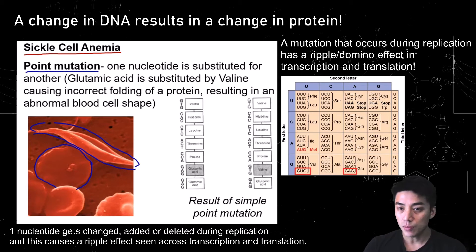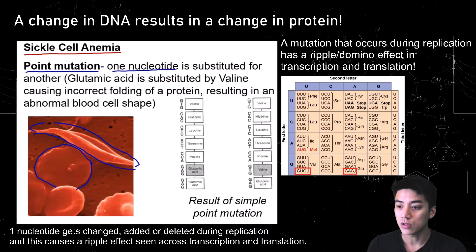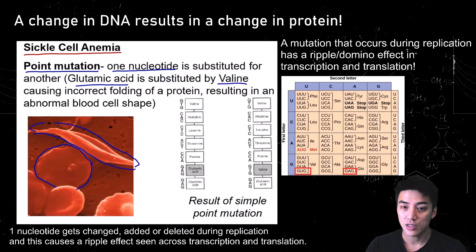A point mutation is when one nucleotide is substituted for another. All it takes is just one mutation to happen during replication and there is a domino effect in transcription and translation.